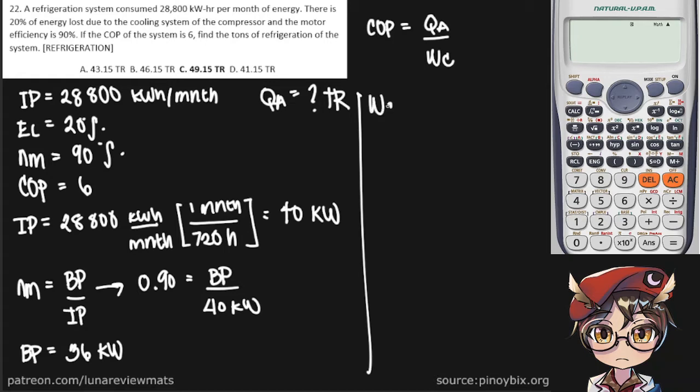First, we should account for the energy loss by multiplying our brake power by 1 minus the energy loss in percent. This is 36 kilowatts times 1 minus 20%. Let's quickly compute for that. We get a compressor work of 28.8 kilowatts.